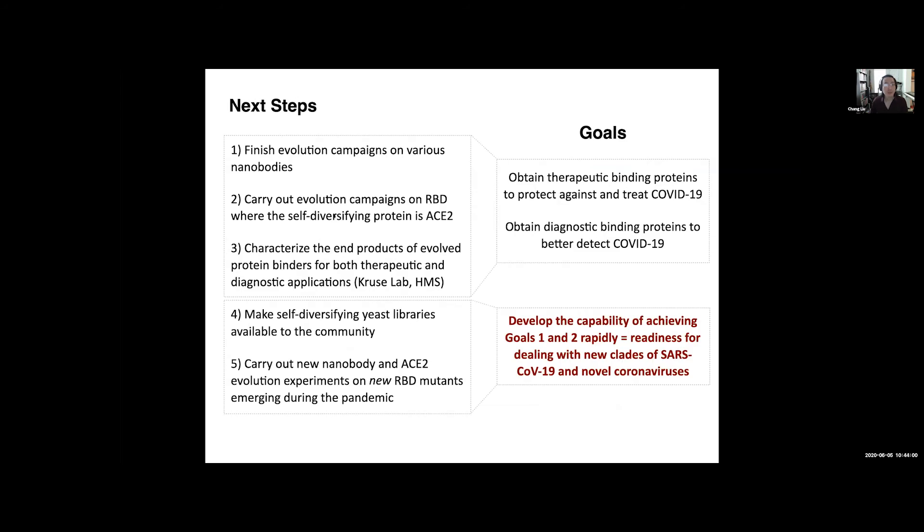The next steps are, we want to finish these evolution campaigns. We want to characterize the end products. This will be done in collaboration with Andrew Kruse's lab at Harvard Med School, who we've been working with on antibody evolution and binding protein evolution for a while now. And then in service of this rapid response capability, we will make the self-diversifying yeast libraries available to the community, and then start carrying out new experiments as new RBD mutants emerge during the pandemic.